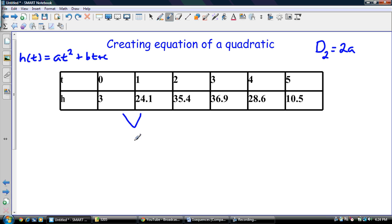So let's start by finding our second level difference. So 24.1 subtract 3 is 21.1. 35.4 subtract 24.1, that's equal to 11.3. And then we have 36.9 subtract 35.4, that's equal to 1.5. And then we got 28.6 subtract 36.9, that's negative 8.3. And then our last one is 10.5 subtract 28.6, and we end up with negative 18.1. All right. So this is what we would call our first level difference and it's not constant.